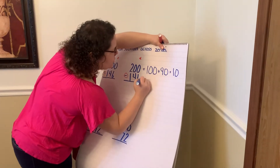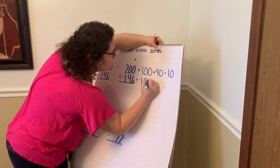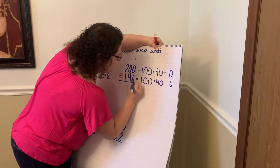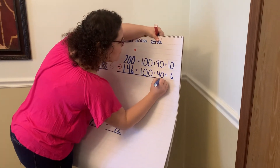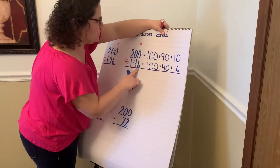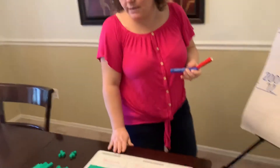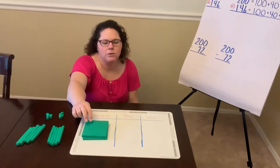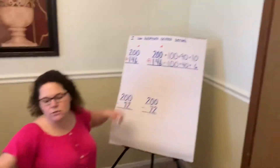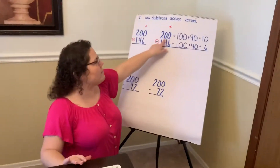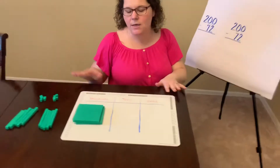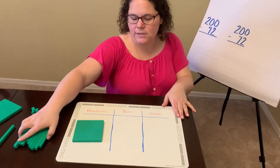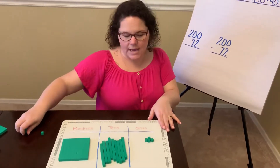We can expand our 146 into 100 plus 40 plus 6. Remember, when we're doing our expanded form method, we're writing the values of each of those digits. Let's look over here at our base 10 pieces now. Our original total is 200, so we're starting with 200. We have that digit two in the hundreds column, so that's our 200. If you remember when we had 200 and we expanded it, we said that 200 was equal to or the same as 90 and 10.